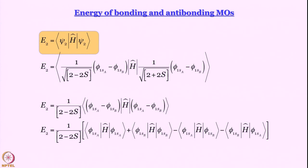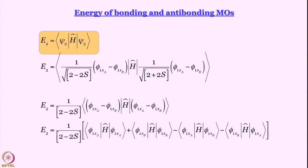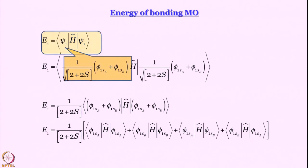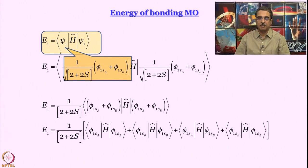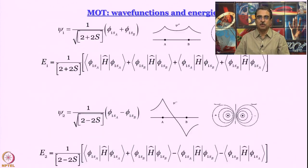Similarly, we can write an expression for E_2. The only difference between E_1 and E_2 is that for the last two terms in E_2, the signs are negative, whereas they are positive for all terms in E_1. The terms themselves are actually all the same. So let us try to evaluate them one by one.